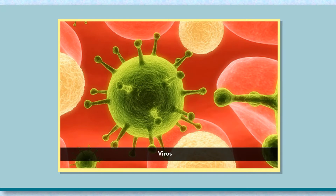Examples of algae are chlorella, diatoms, and chlamydomonas. Viruses are the tiniest microorganisms and cannot be seen with ordinary microscopes. They can only be seen with powerful electron microscopes, which can magnify an image up to two lakh times.